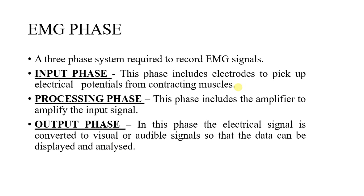There are two types of muscle contraction. On the basis of the contraction, a signal is being processed. The second phase is the processing phase, which includes an amplifier to amplify the input signal. The third is the output phase.